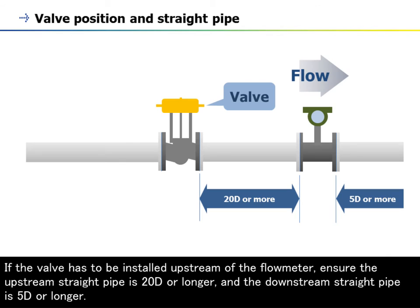If the valve has to be installed upstream of the flow meter, ensure the upstream straight pipe is 20D or longer, and the downstream straight pipe is 5D or longer.